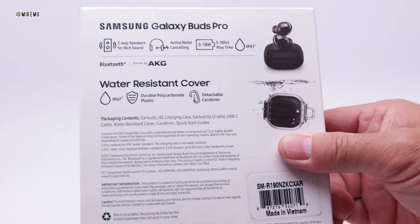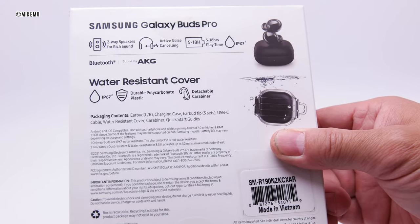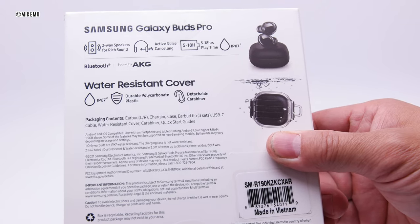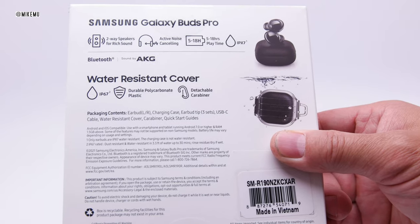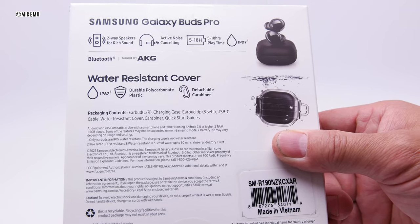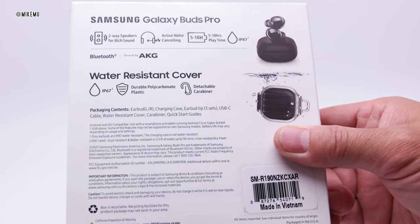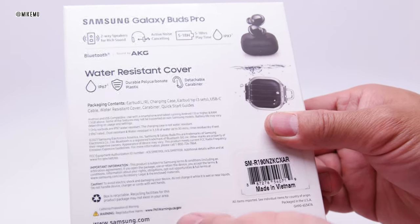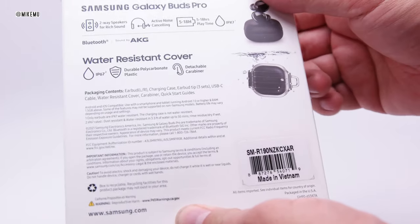Now, the packaging contents here, it looks like there's the earbuds left and right, charging case, three sets of earbud tips for various different ear sizes, ear hole sizes, USB-C cable, water-resistant cover, carabiner, and a quick start guide.